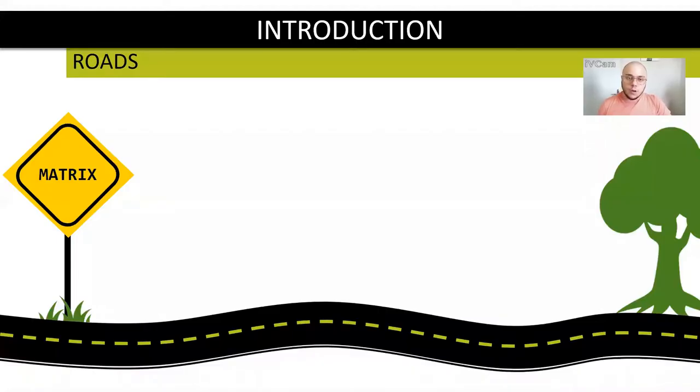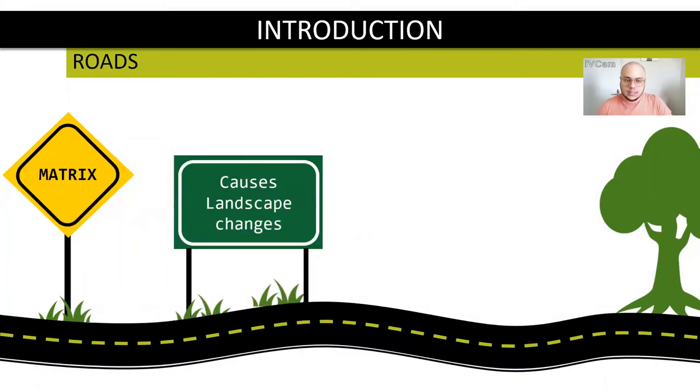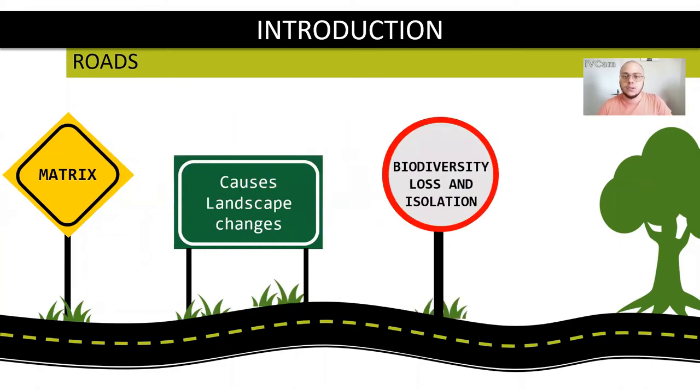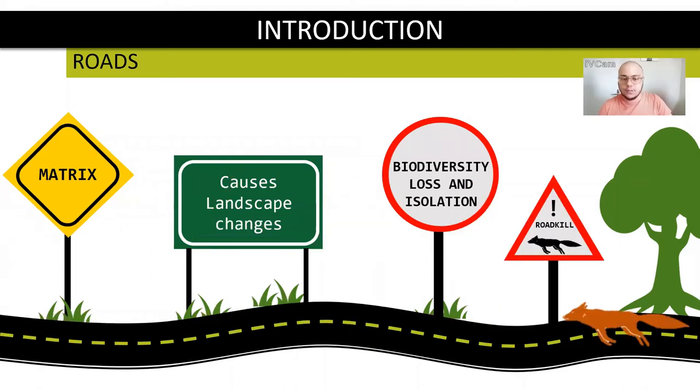So the roads are matrices in landscape by themselves, but also lead to landscape use changes what can severely cause habitat loss with biodiversity loss and isolation. The most conspicuous signs of those impacts are the fauna roadkill.